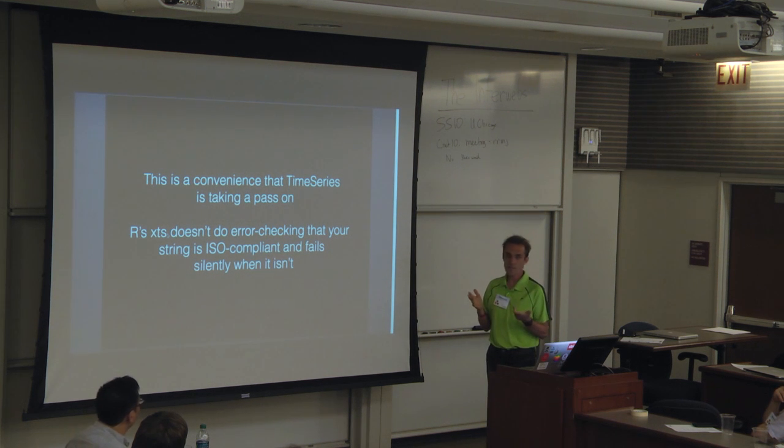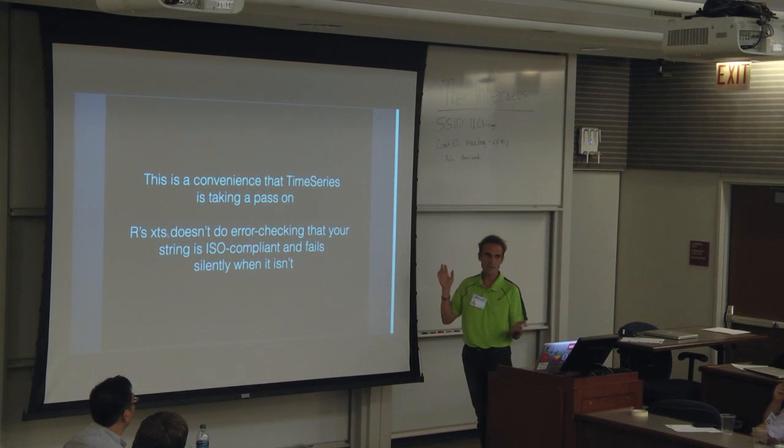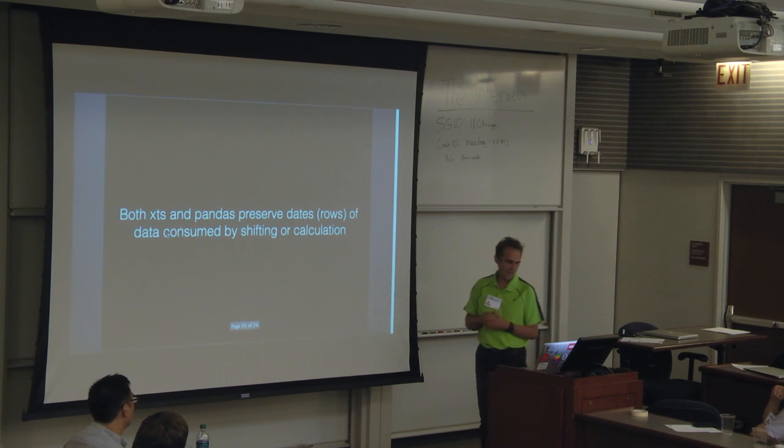Even R's XTS package doesn't do error checking for this. So if you were to pass 2000-1-05, it would fail silently. It wouldn't give you that date. It would give you the entire data set because you've got to precede with zeros. So we're taking a pass on that for now.